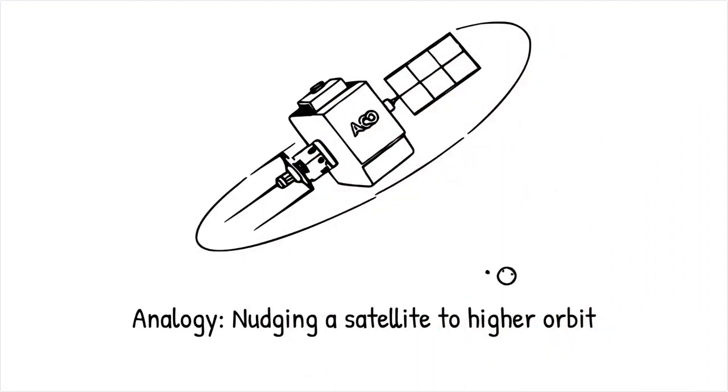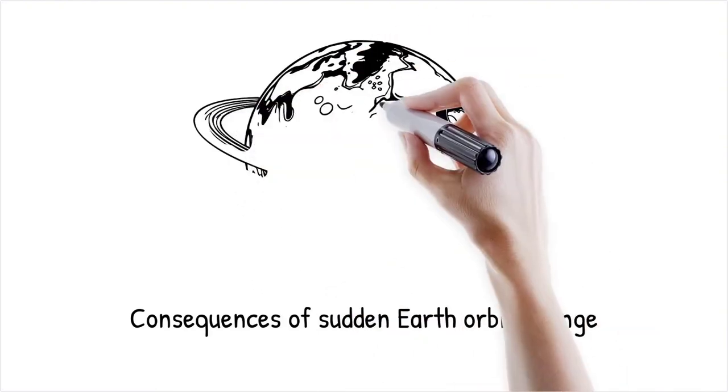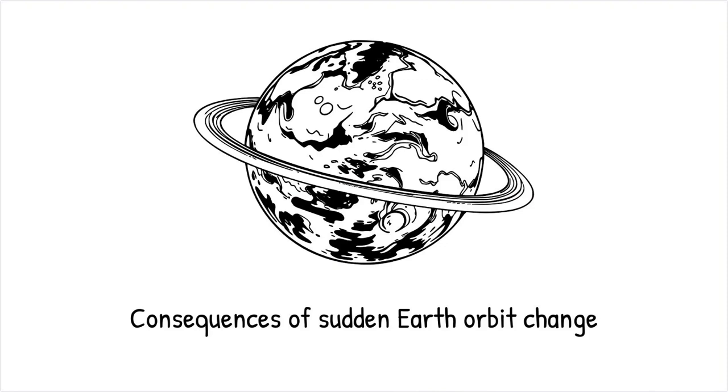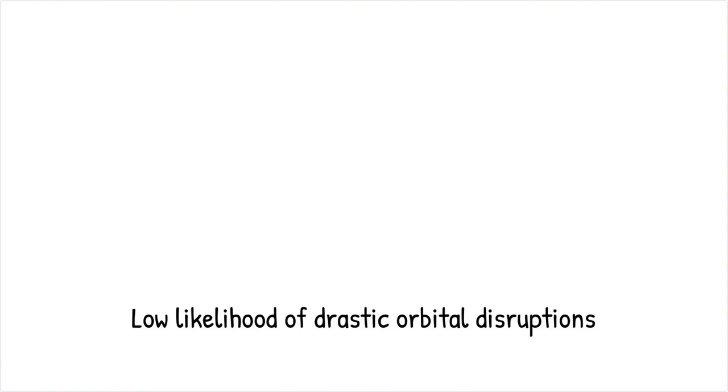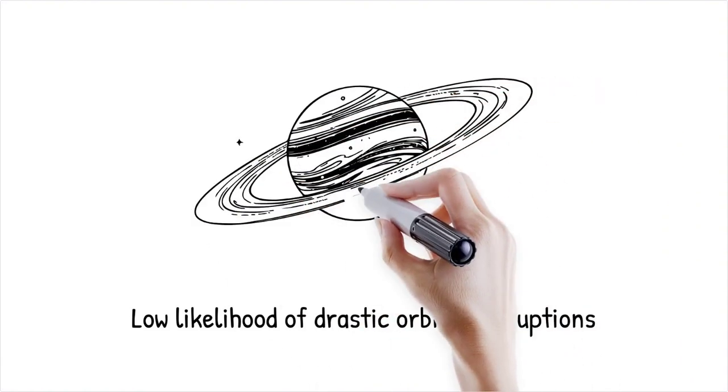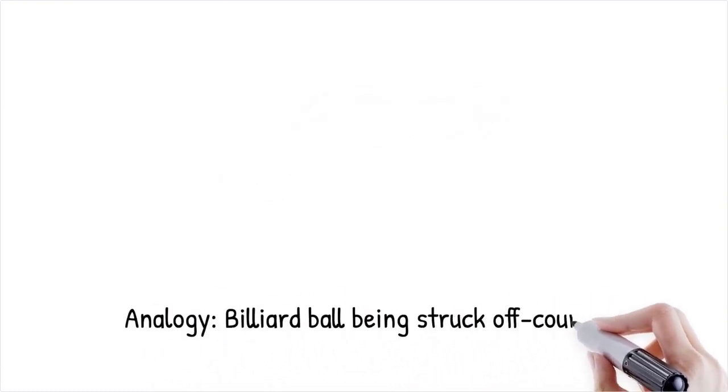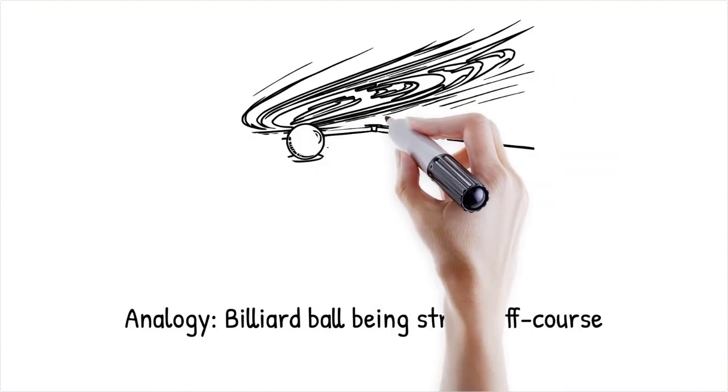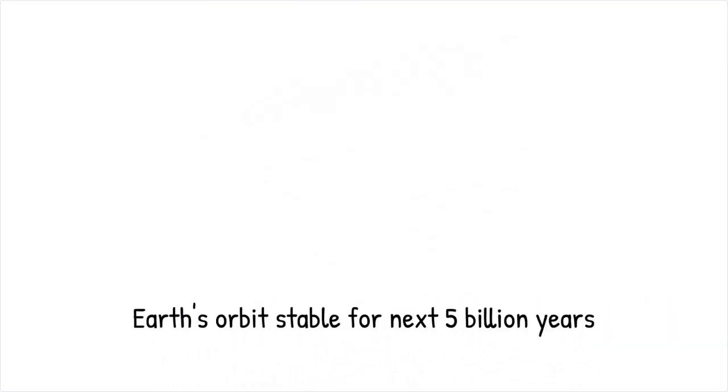If a large celestial object, such as a passing rogue planet, disrupted Earth's orbit, the consequences could be catastrophic. A slight inward shift could increase surface temperatures, disrupting ecosystems, while an outward shift could plunge the planet into a deep freeze. However, the likelihood of such a drastic event is extremely low given the current stability of the solar system. Simulations show that a passing star within 0.1 light-years of the solar system could destabilize planetary orbits, but such events occur only once every 100 billion years on average. This is like a billiard ball suddenly being struck off course. Small perturbations may occur naturally, but major disruptions require an external force.